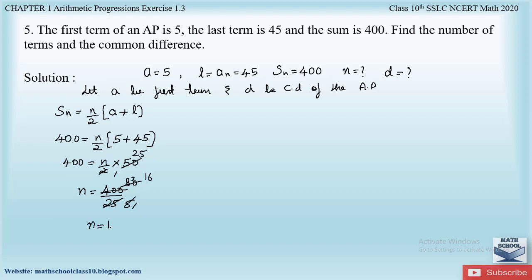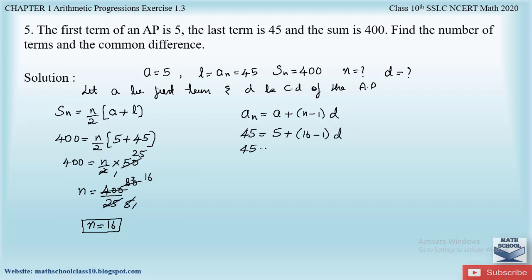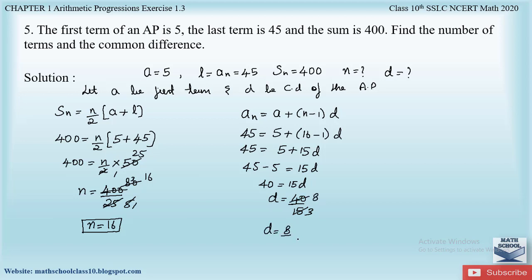Now find d using the nth term formula: aₙ = a + (n−1)d. Substituting the known values: 45 = 5 + (16−1)d = 5 + 15d. So 40 = 15d, giving d = 40/15 = 8/3. Therefore the number of terms n = 16 and the common difference d = 8/3.